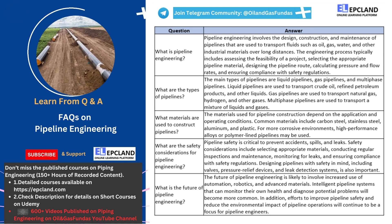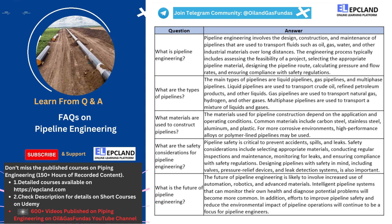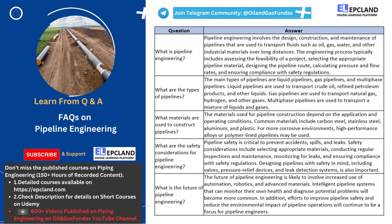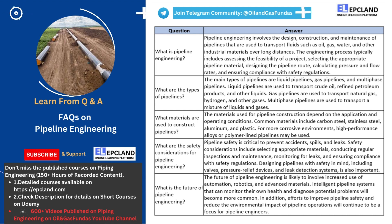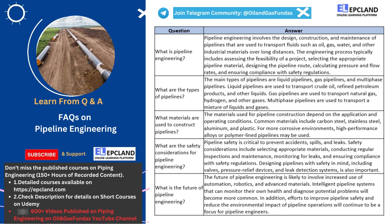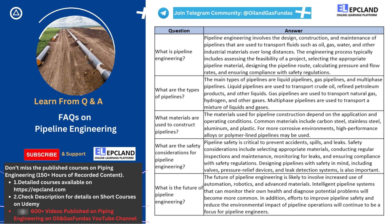Next up, we have the fourth question: What are the safety considerations for pipeline engineering? Pipeline engineering involves designing, constructing, and maintaining pipelines that transport fluids over long distances. However, safety is of utmost importance. Pipeline accidents, spills, and leaks can have severe consequences, including environmental damage, loss of life, and property damage. Safety considerations begin with the selection of appropriate materials that can withstand the operating conditions and minimize the risk of corrosion and failure.